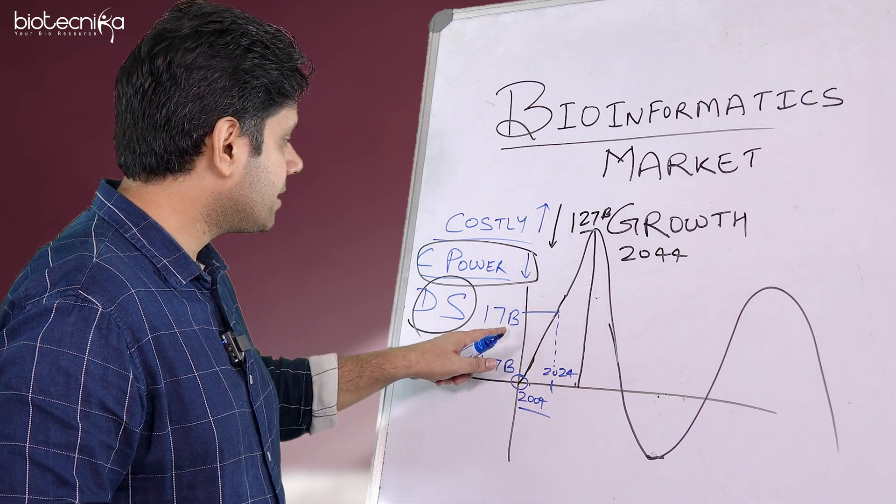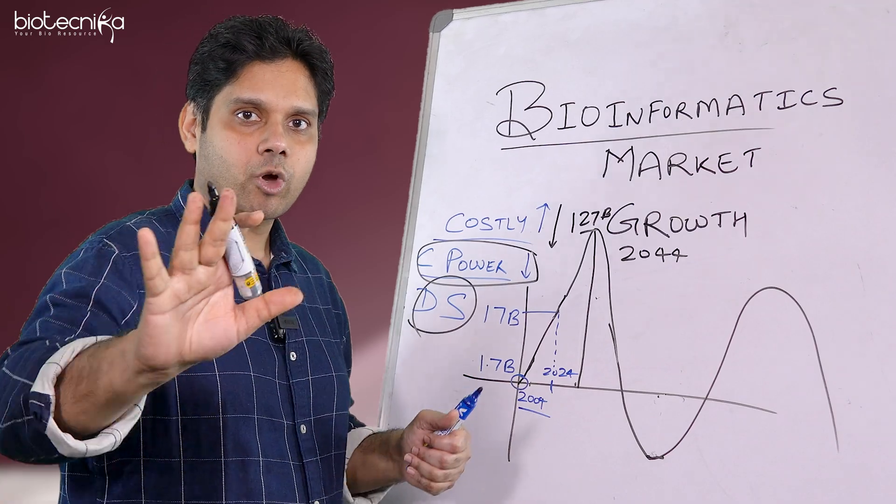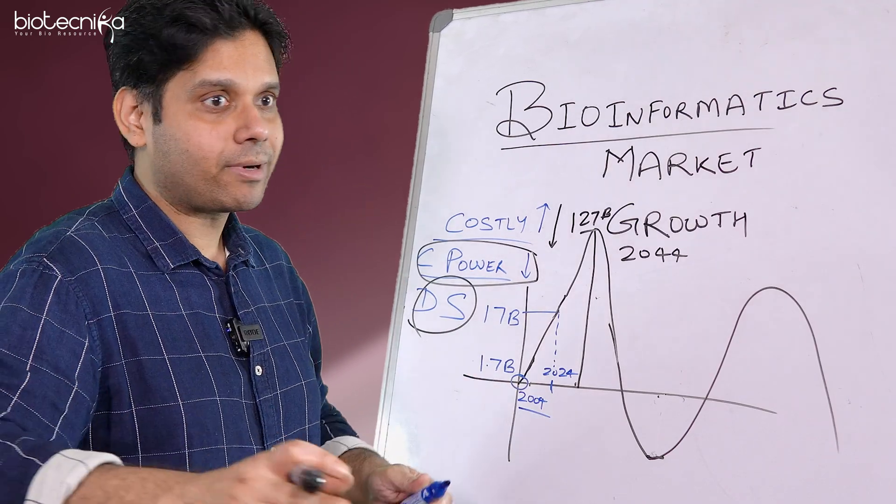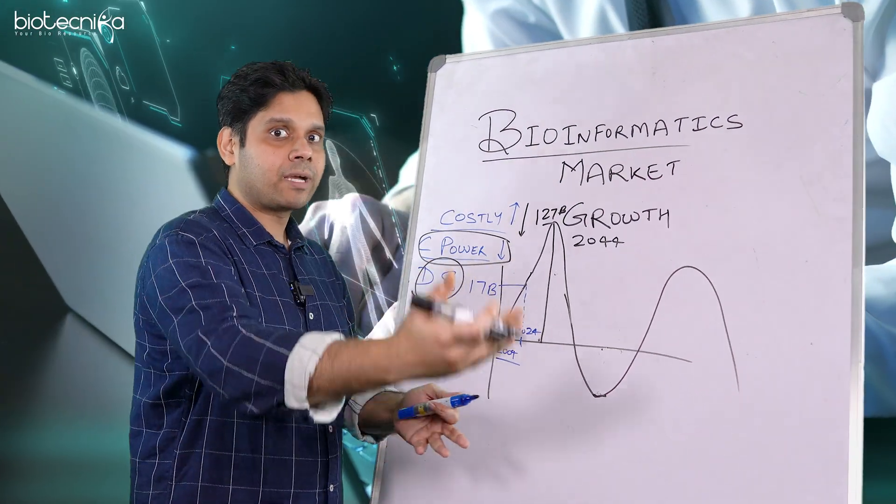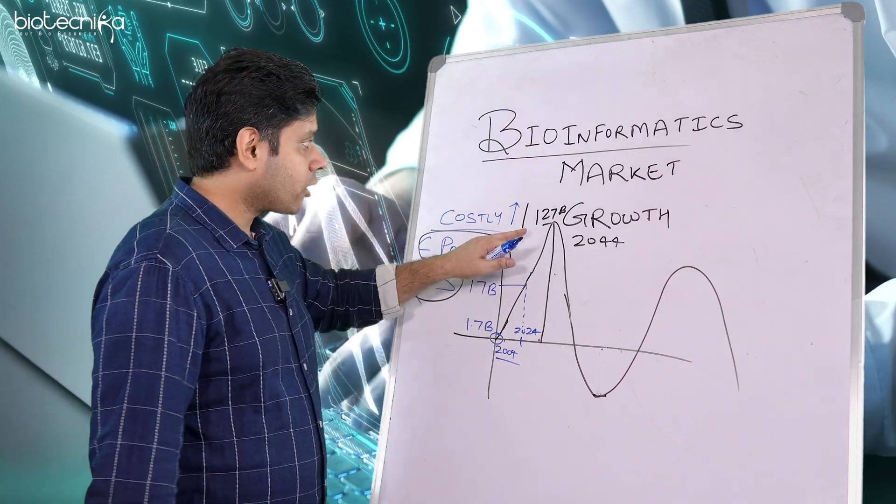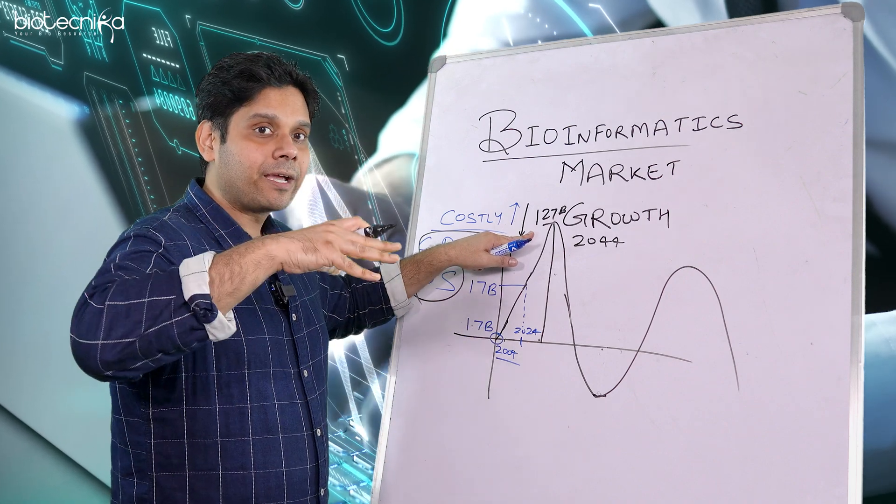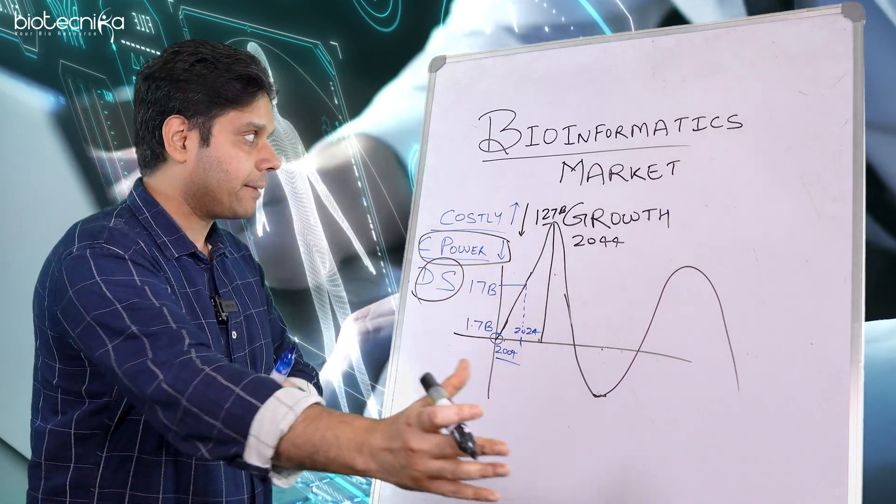So in the next 20 years, we are going to see this 17 billion convert to 127 billion just bioinformatics. I'm talking about only hardcore bioinformatics. I'm not talking about application of bioinformatics, AI ML, and other sectors. If I combine that, it will go to trillion. I'm talking about the software, bioinformatics softwares, and the core bioinformatics research which is happening right now.